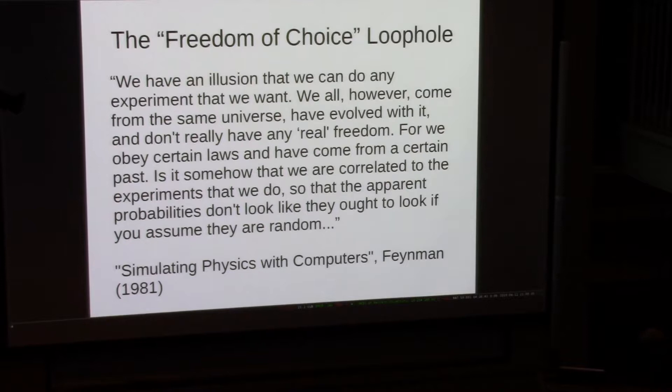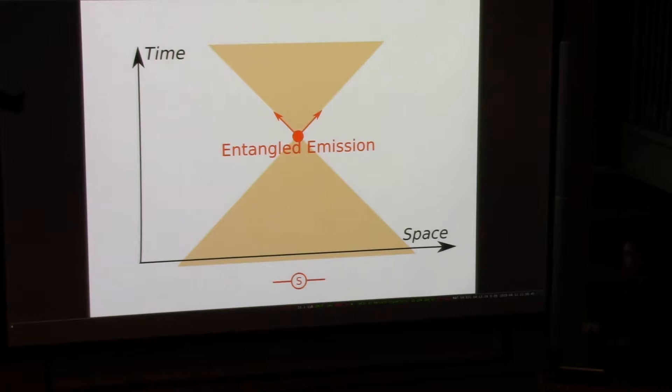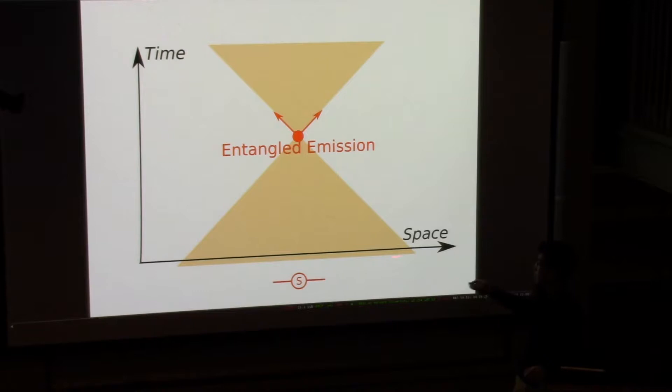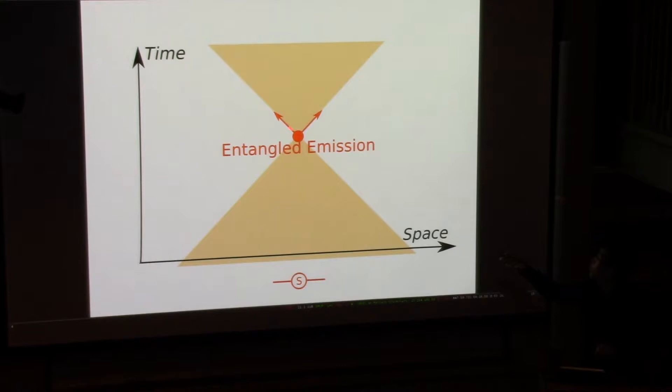Feynman actually has something to say about this in his paper where he introduced quantum computing. We have an illusion that we can do any experiment that we want. We all, however, come from the same universe, have evolved with it, and we don't really have any real free will. For we obey certain laws that have come from a certain past. So is it somehow that we're correlated to the experiments that we do so that the apparent probabilities don't look like they ought to look if you assume freedom of choice?